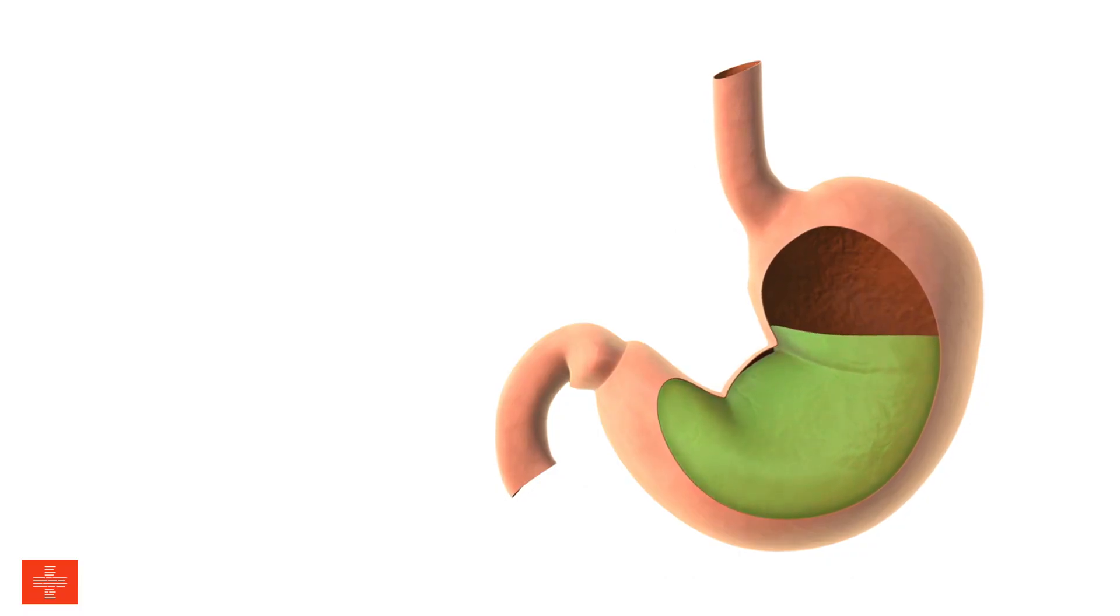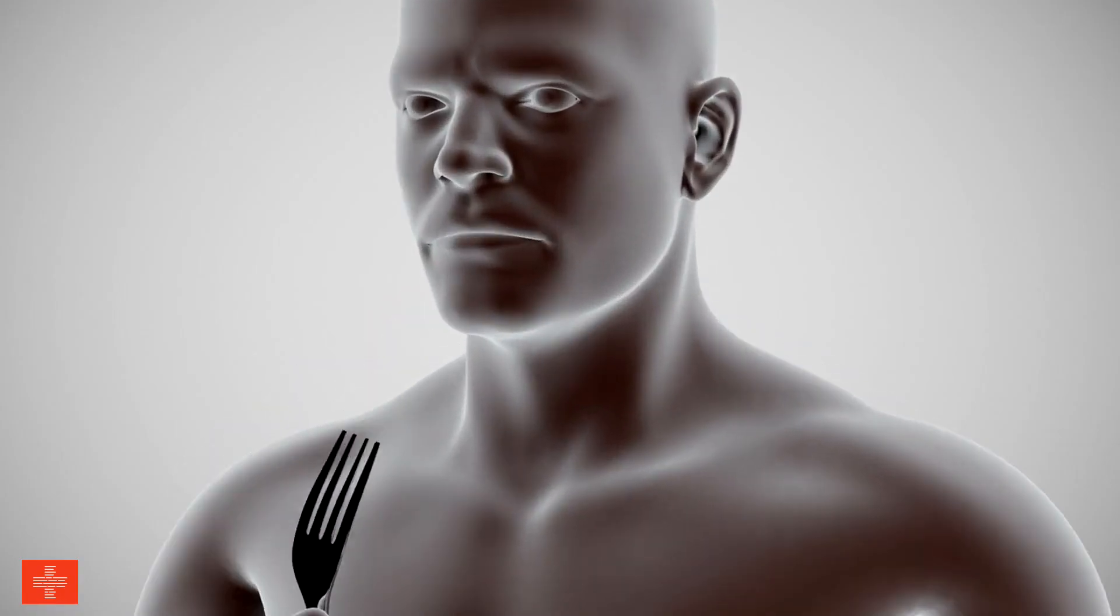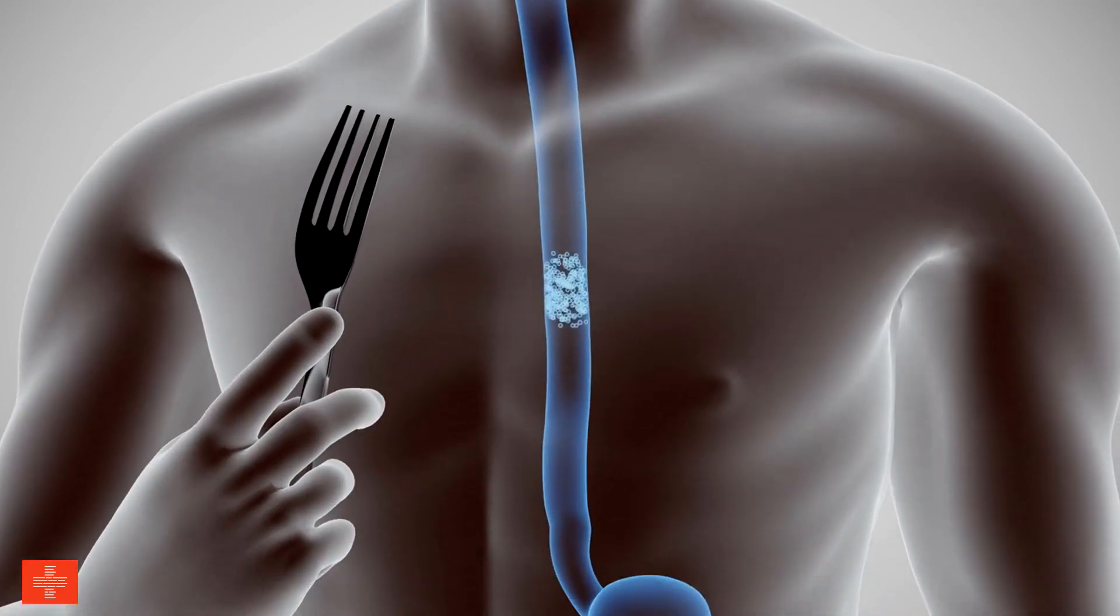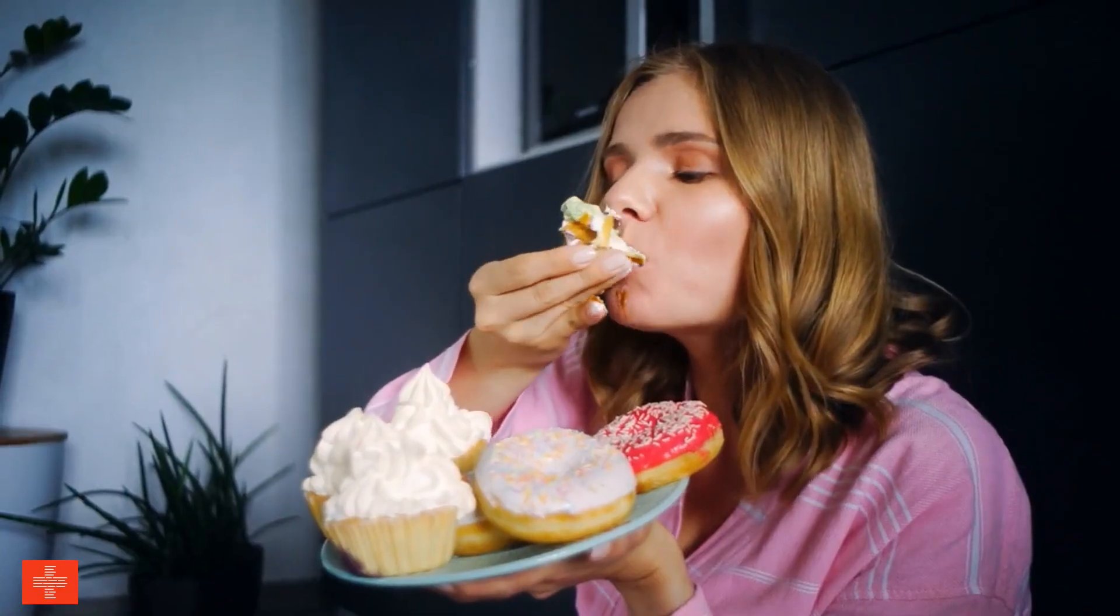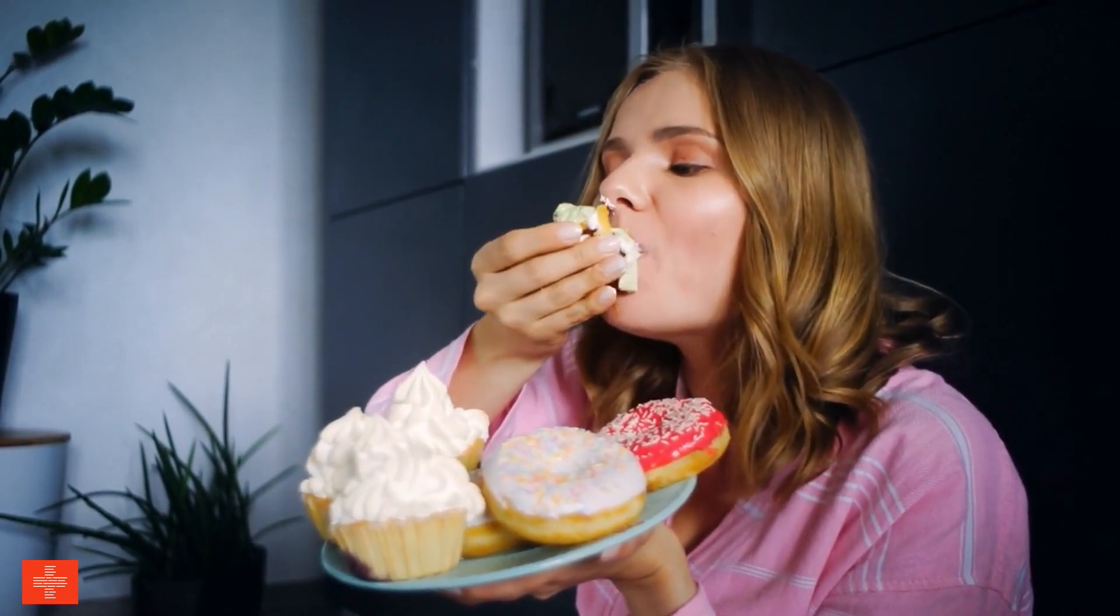In the stomach, food is mixed with gastric acids and enzymes that break down proteins and fats. The stomach also churns the food to break it down into smaller pieces. Food can stay in the stomach for anywhere from 2 to 5 hours, depending on the type of food and how much you have eaten.